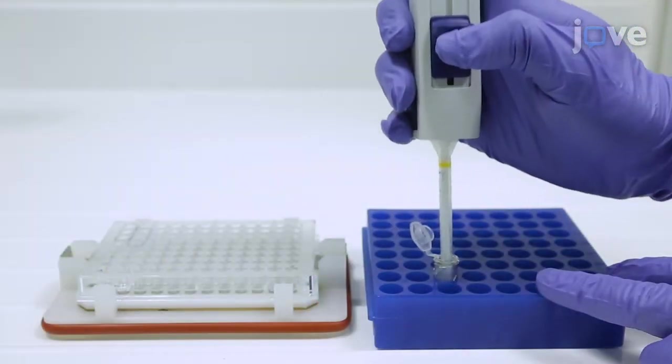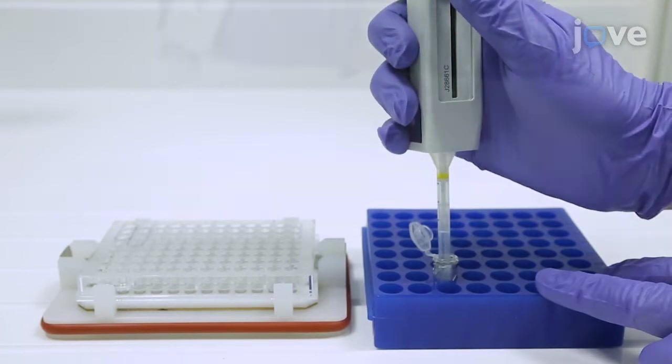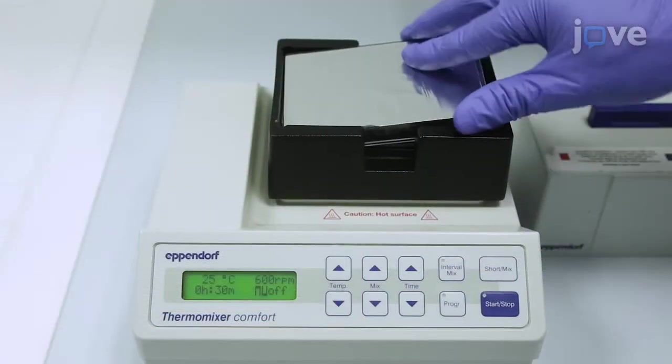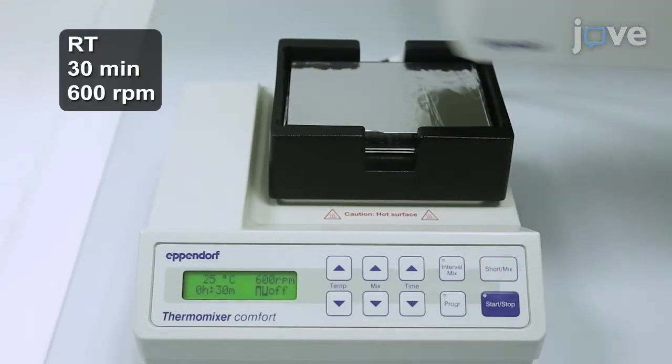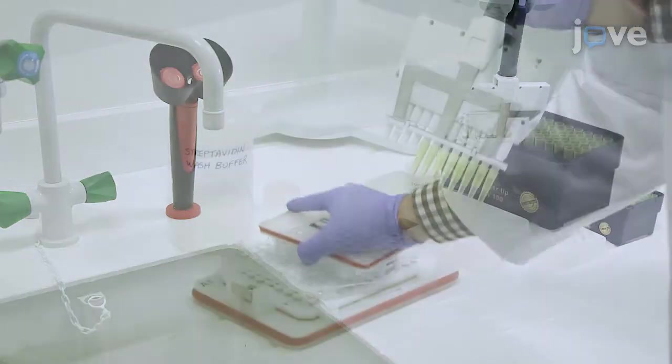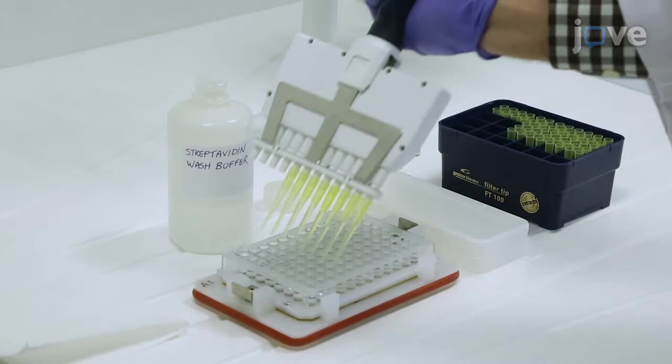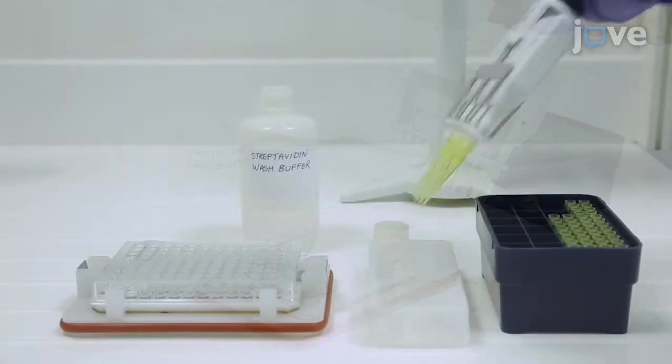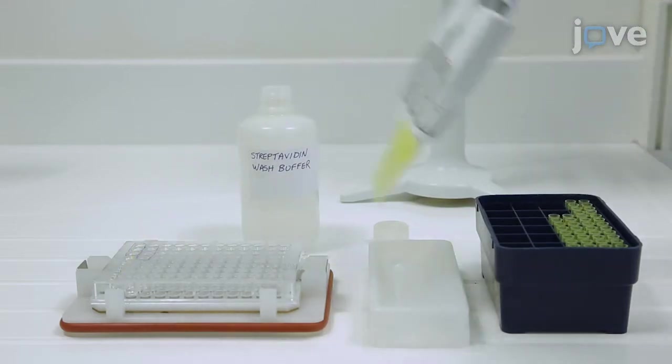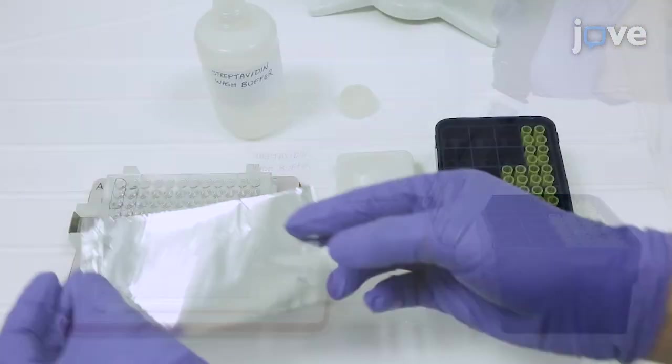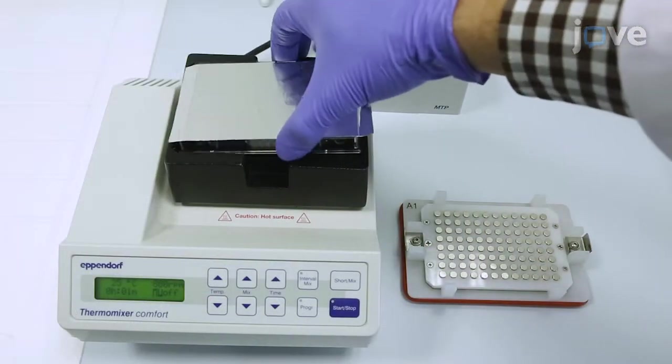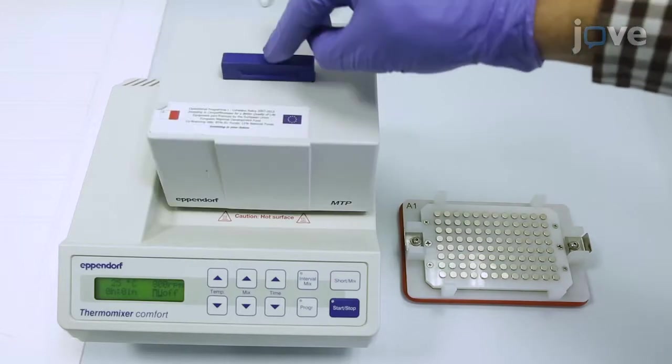Next, load the wells with 50 microliters of freshly mixed streptavidin phycoerythrin. Then perform a shaking incubation at room temperature at 600 rpm, followed by a wash step using streptavidin wash buffer. After completing the wash step, load each well with 100 microliters of streptavidin wash buffer and seal the plate with an aluminum plate seal. Then shake the plate at 800 rpm at room temperature for 3 minutes.